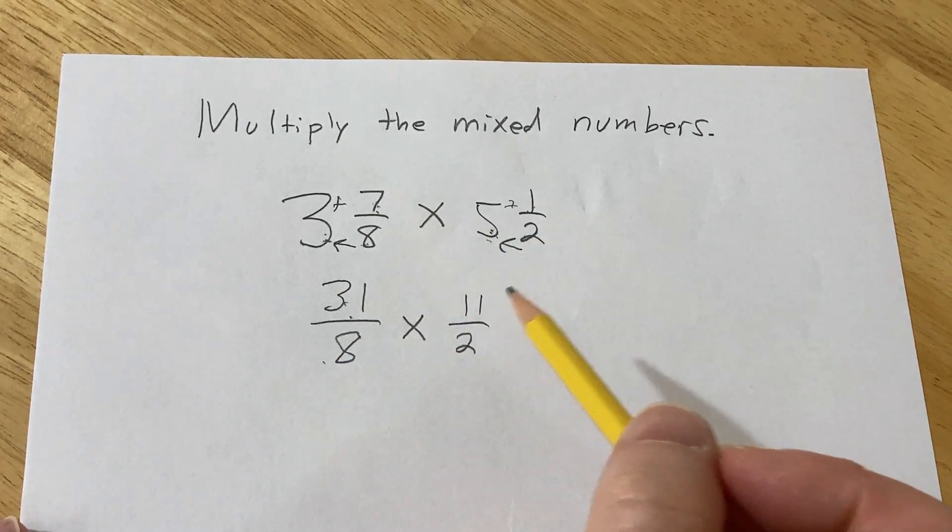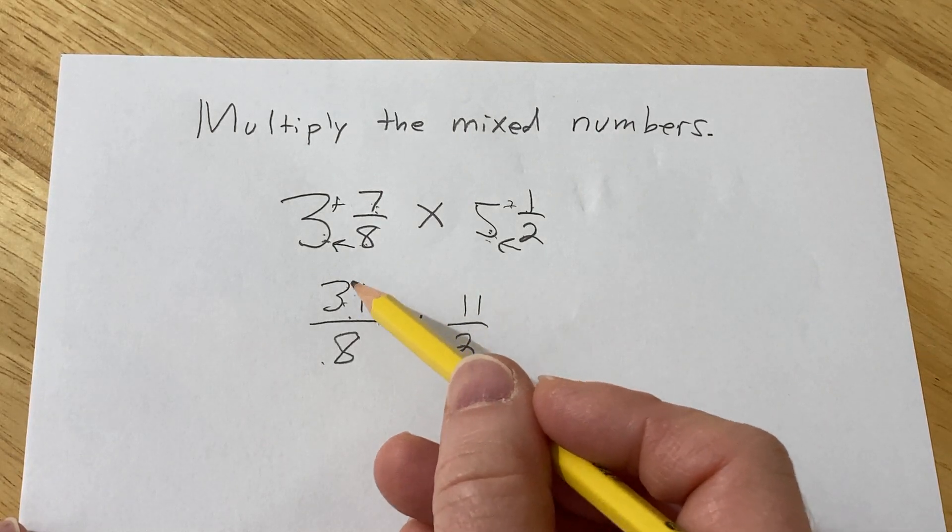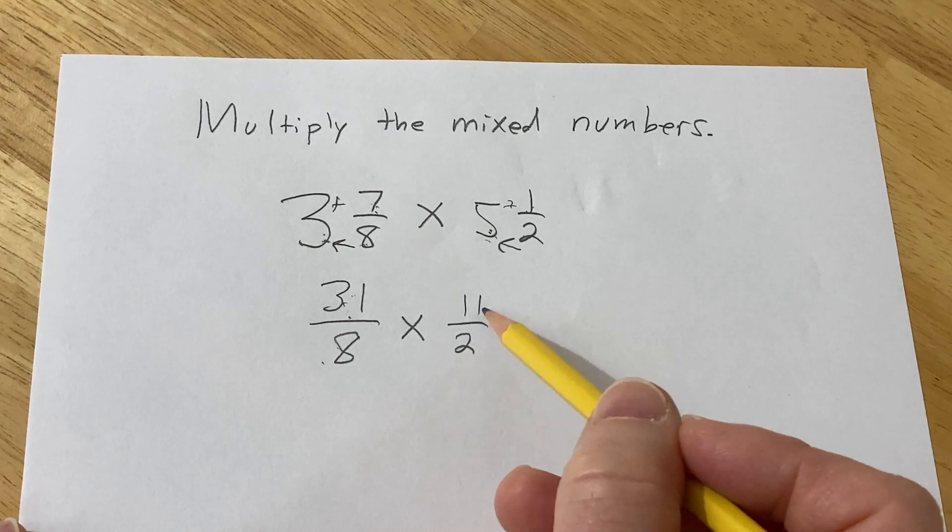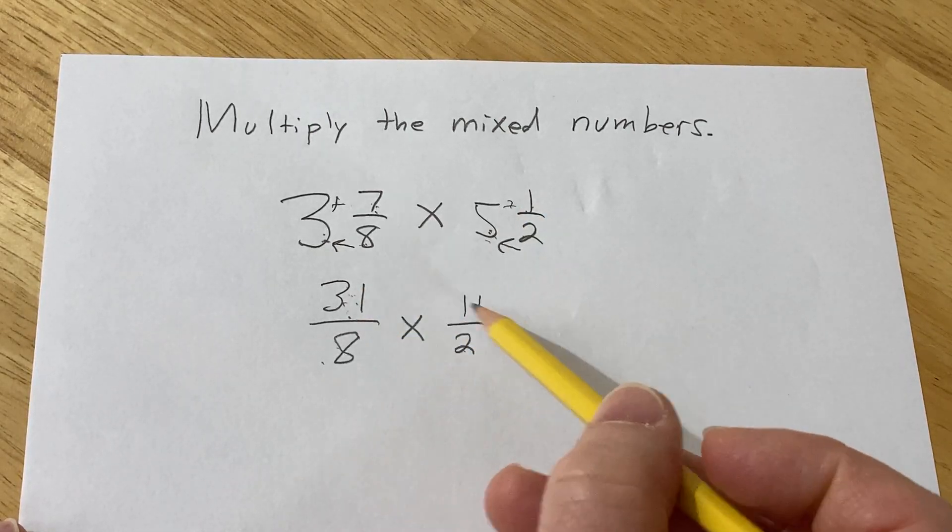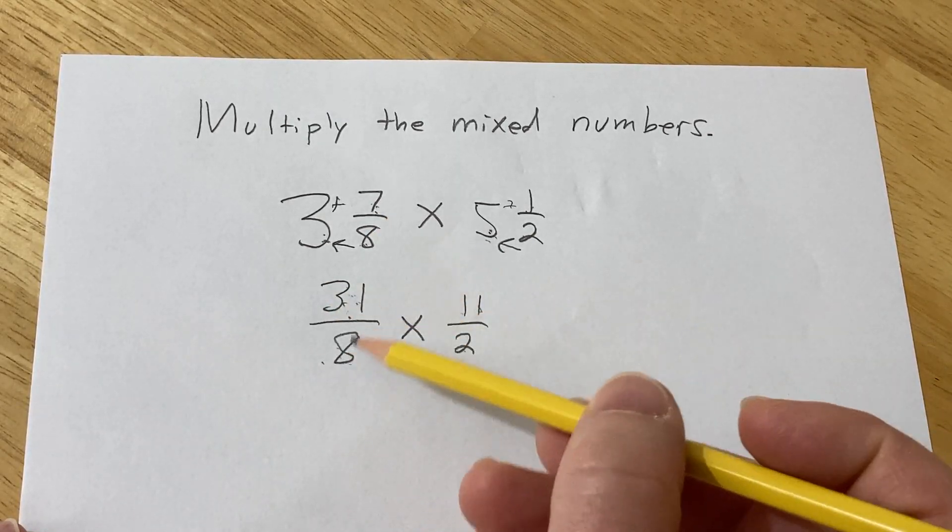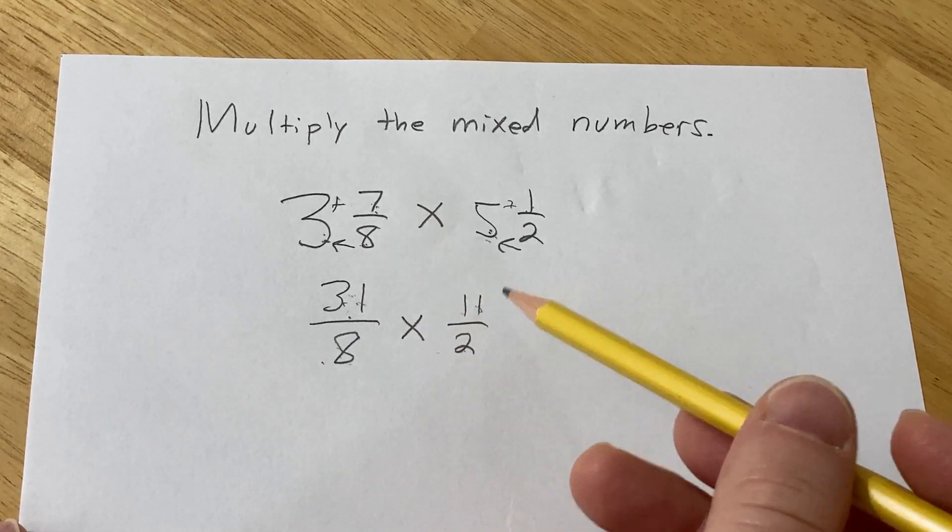At this point we might try to reduce. You're allowed to cancel any number. You're allowed to cancel factors of 31 with factors of 8, and you're allowed to cancel factors of 11 with factors of 2. Basically you're allowed to cancel anything on top with anything on the bottom. But nothing here has a common factor.